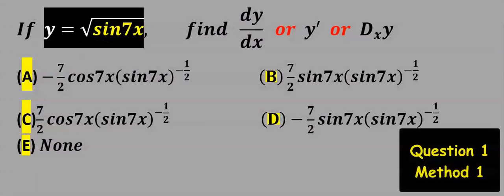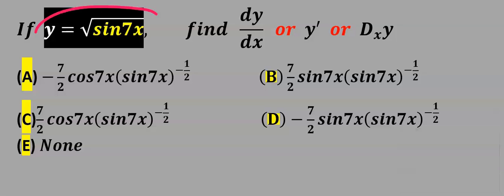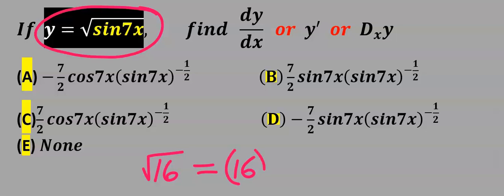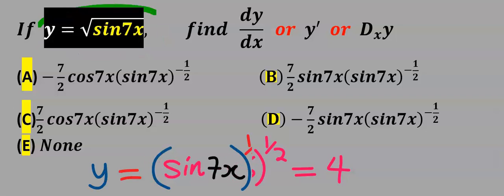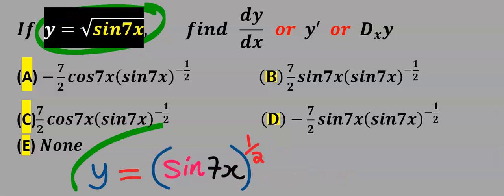Let's find the derivative of this question. The first step is to rewrite this question. We can recap that the square root of 16 is the same thing as 16 to the power of half, which is equal to 4. Hence instead of the original form, we are going to solve this rewritten version — both are the same.